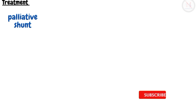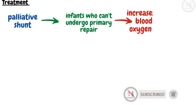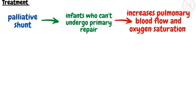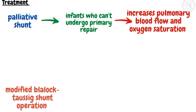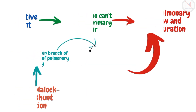For treatment, a palliative shunt is used for infants who cannot undergo primary repair. This procedure increases pulmonary blood flow and oxygen saturation. The preferred procedure is the modified Blalock-Taussig shunt operation, in which a connection is established between a branch of the pulmonary artery and a branch of the aorta. Blood in the aorta at higher pressure flows into the pulmonary artery at lower pressure, increasing blood flow to the lungs and improving oxygen content.